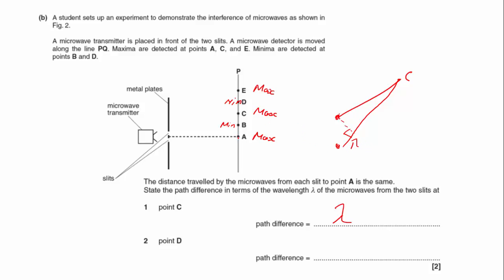And to point D, which is a minima, but it's the second minima. So in order to get to point B, that would be half a wavelength. To C would be one wavelength. And then to D would be one and a half wavelengths or three wavelengths over two.